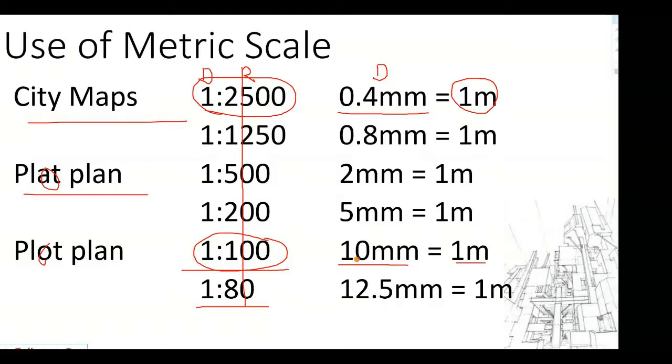We can also say that in a 1 is to 100 scale, for every 1 centimeter in the drawing, that will be—let me fix it—for every 1 centimeter, that's equivalent to 1 meter. That is why the 1 is to 100 is a full-size scale. Imagine 1 to 1.